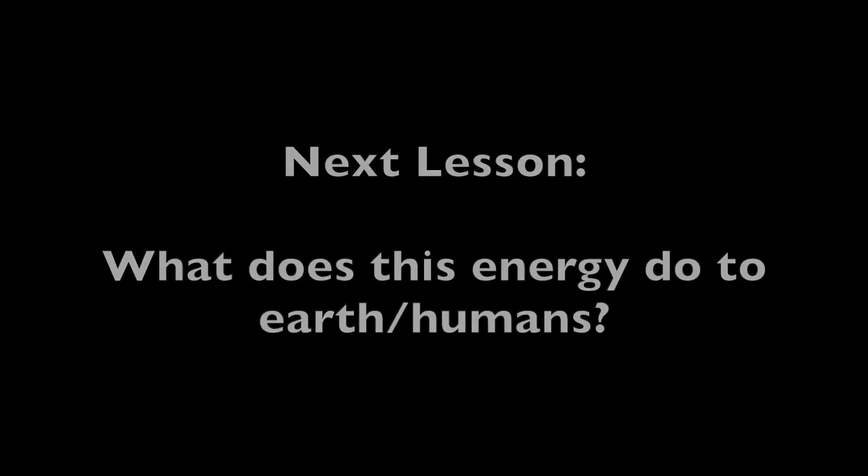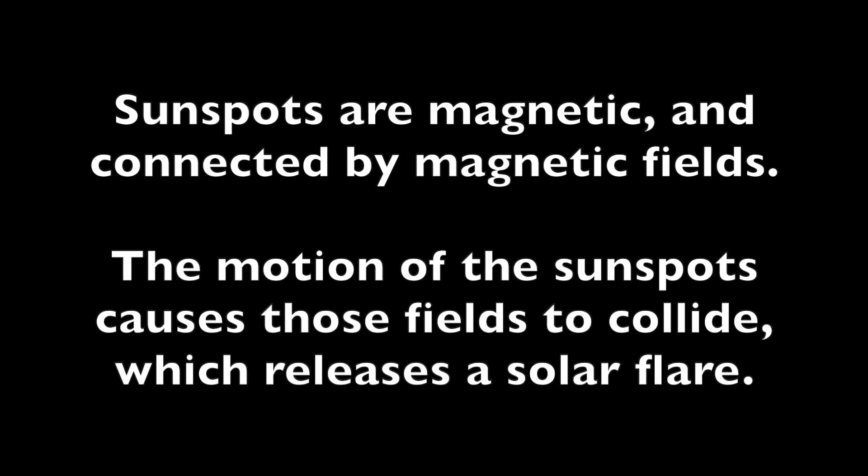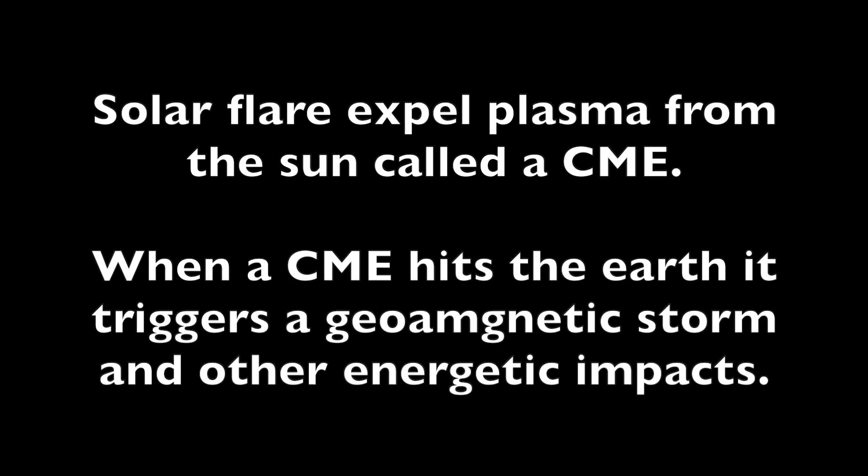In the next lesson, we will be discussing what these energies do, but for now, just remember: sunspots are magnetic and they are connected by magnetic fields full of electrified plasma. When the sunspots move around, the fields can interact and collide, releasing a solar flare which then can send out a coronal mass ejection, and if it hits Earth, it can trigger a geomagnetic storm and other energetic effects on our planet.